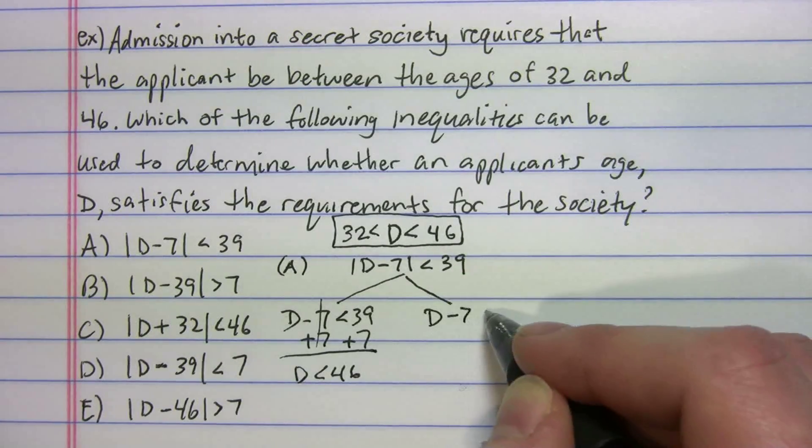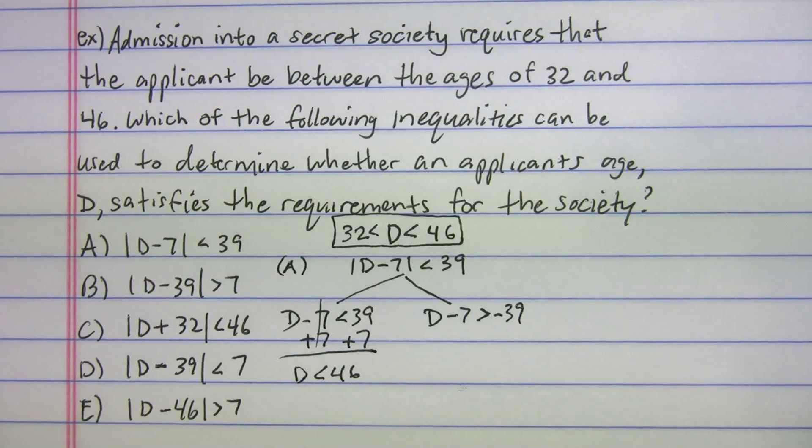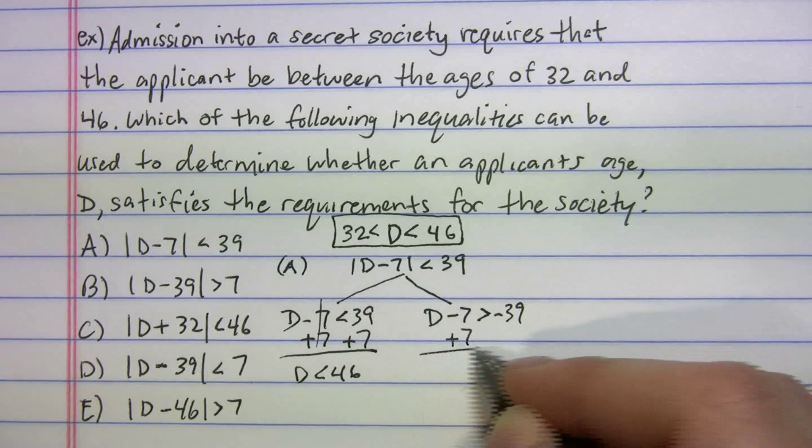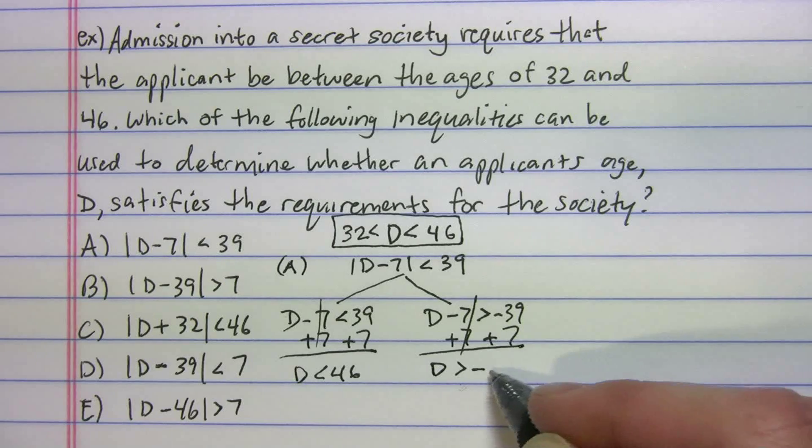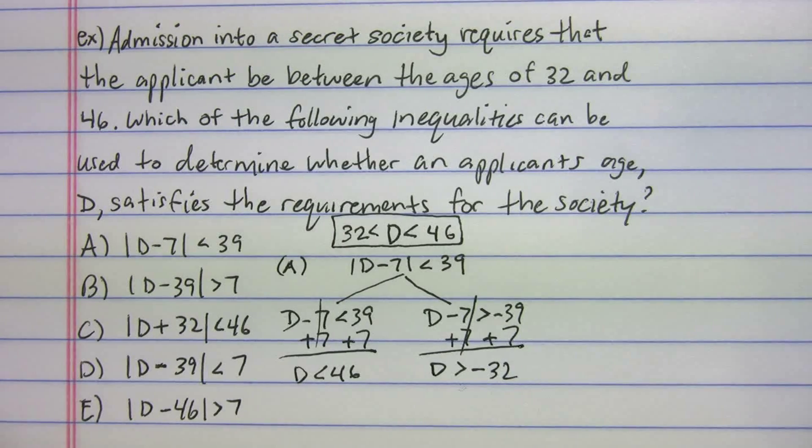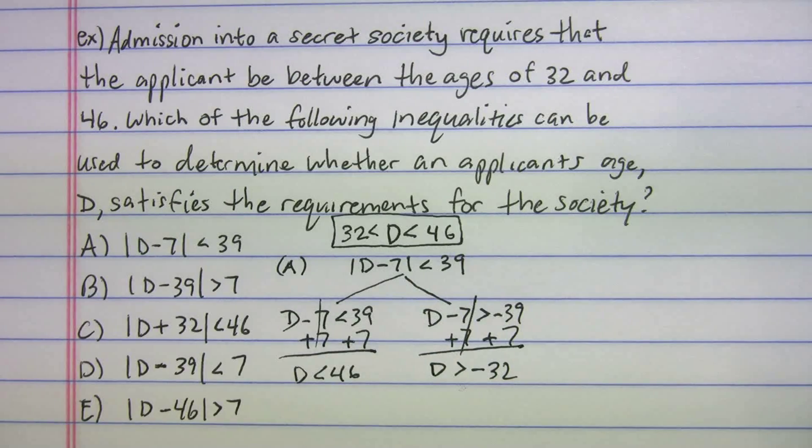Well, look what happens when we do the negative one. D minus 7, we have to flip the sign, negative 39. When we add the 7, we get D is greater than negative 32. Not what we want, right? Because D has to be greater than 32. So A is gone.